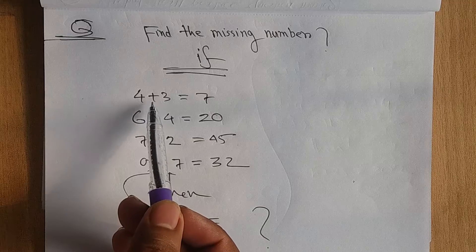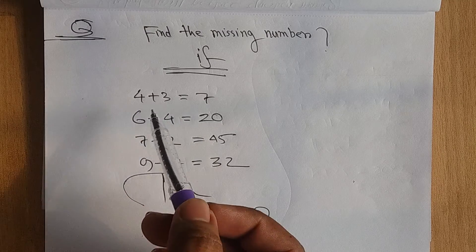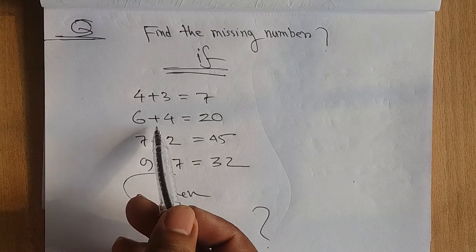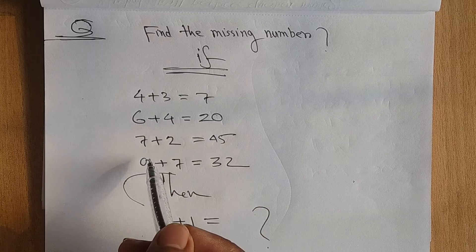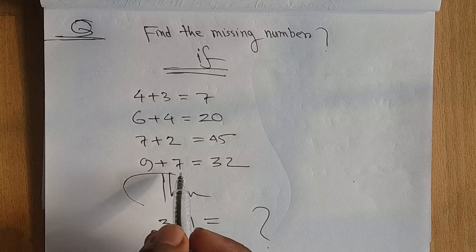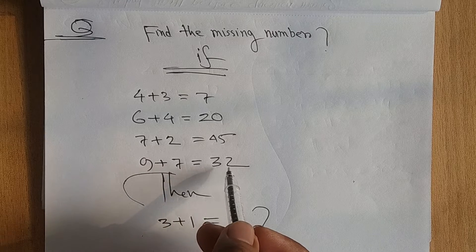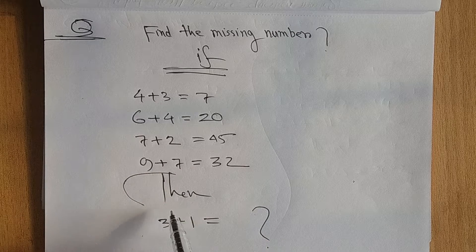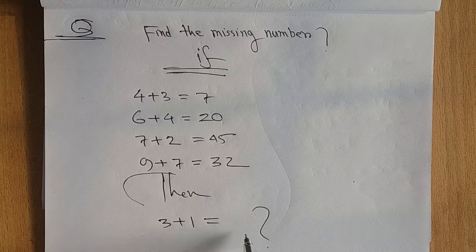jody 4+3=7 high 6+4=20 high 7+2=45 high 9+7=32 high the way then that for 3+1 shaman ki have a question mark